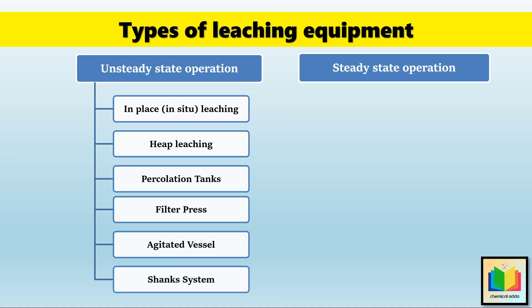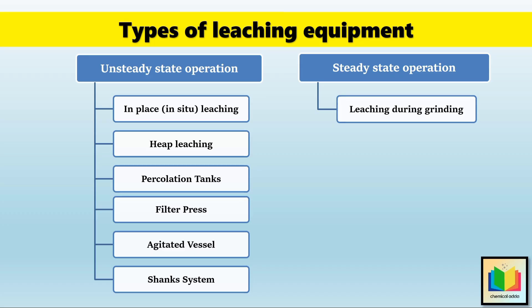The shank system is commonly used in sugar production to extract sucrose from crushed cane. Now let's look at steady state leaching, where extraction happens continuously. The first steady state operation is leaching during grinding, where the solvent is added directly while grinding the solid, improving extraction. The next type is leaching in door-type agitators, where rotating paddles are used to mix solids and solvent, which speeds up leaching.